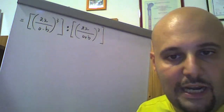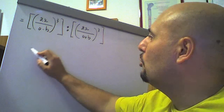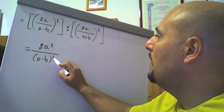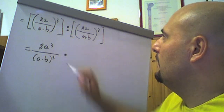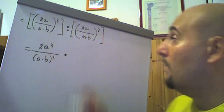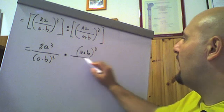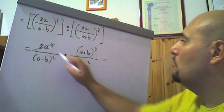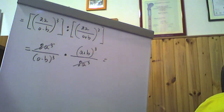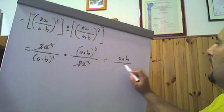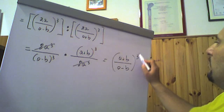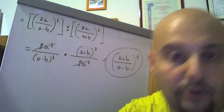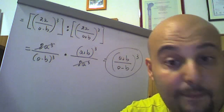Fatto questo: elevo al cubo quei due 2a, che vuol dire elevare al cubo 2 per a elevato al cubo, quindi 8a al cubo diviso (a meno b) elevato al cubo. Il diviso lo trasformo in per, ribalto il numeratore mettendo (a più b) che rispettivamente elevo al cubo, fratto 2a al cubo che è un altro 8a al cubo. Come potete vedere, l'unica cosa che cambia è: se ne vanno questi due 8a al cubo. Il risultato finale è quindi un rapporto tra (a più b) e (a meno b) che posso elevare tutto quanto al cubo, o anche scrivere (a più b) elevato al cubo fratto (a meno b) elevato al cubo. Ecco questa facile espressione resa facile grazie alle conoscenze dei prodotti notevoli.